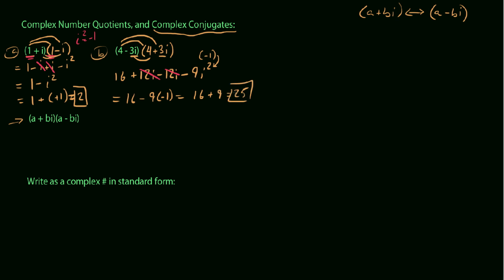But recall that i squared is simply that's just like negative 1 here. So we end up with 16 minus 9 times negative 1. In other words, we get 16 plus 9, end up with 25, which again is purely real.